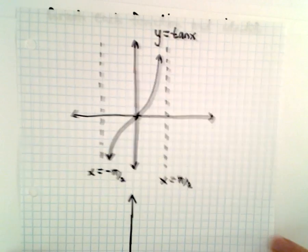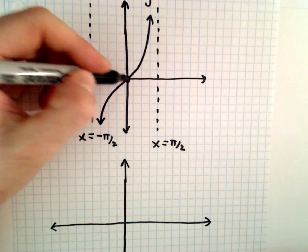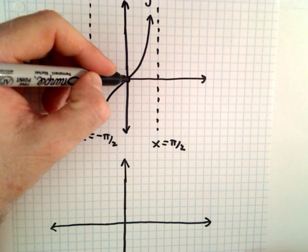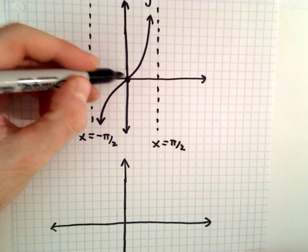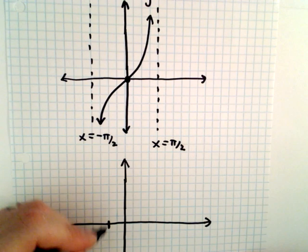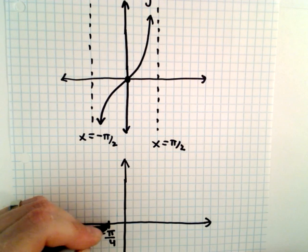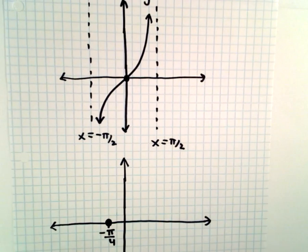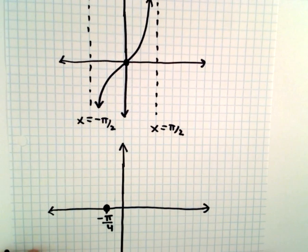I'm just going to just do one period. Instead of being at 0, 0, since we're moving everything to the left by pi over 4 units, let's make this negative pi over 4. It'll now cross the x-axis at that x-coordinate.